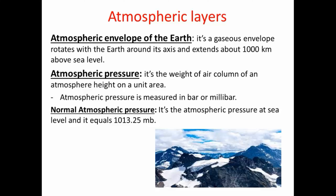As you go up, atmospheric pressure decreases due to decreasing height of the air column, so its weight decreases. Atmospheric pressure is measured in bar or millibar, so one bar equals one thousand millibar. The normal atmospheric pressure value at sea level equals 1013.25 millibar.